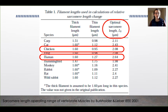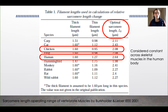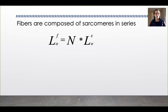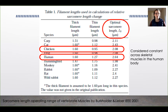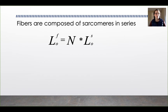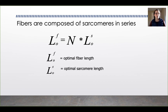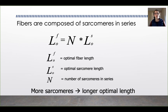The optimal sarcomere length of 2.64 microns for humans is considered constant across skeletal muscles in the human body. This is important because muscle fibers are composed of sarcomeres in series. In the equation, L0F is your optimal fiber length, L0S is your optimal sarcomere length (2.64 microns for humans), and N is the number of sarcomeres in series needed to achieve that optimal muscle fiber length. In short, more sarcomeres lead to longer optimal fiber length.